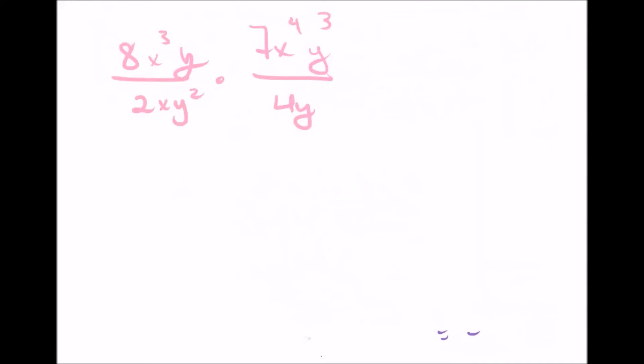The next example of multiplication is slightly different because there's not really much you can factor out. In the other example, it was clear you could factor the top and bottom before multiplying. In this one, there's not much factoring you can do — 8x cubed y, what are you going to take out of that? It's just one expression. So in this type of problem, you're just going to multiply everything together right away, then simplify.